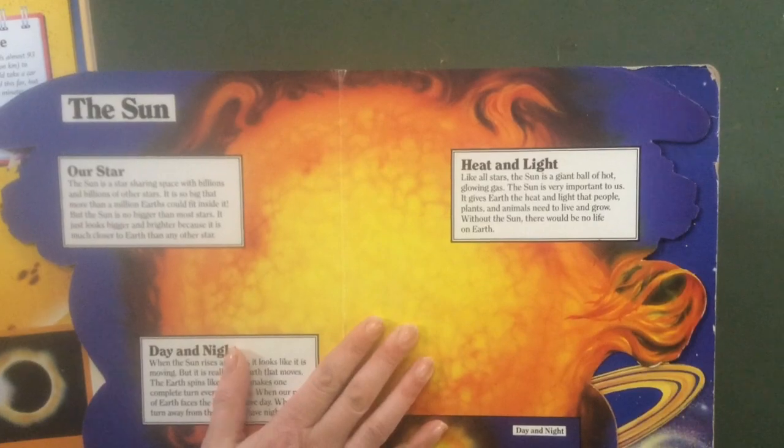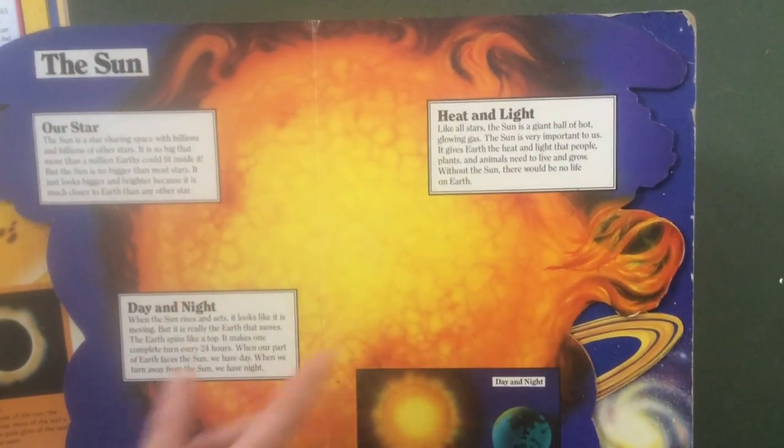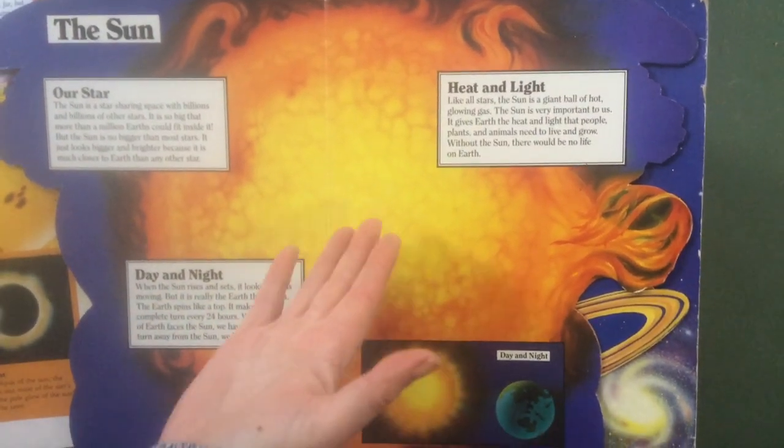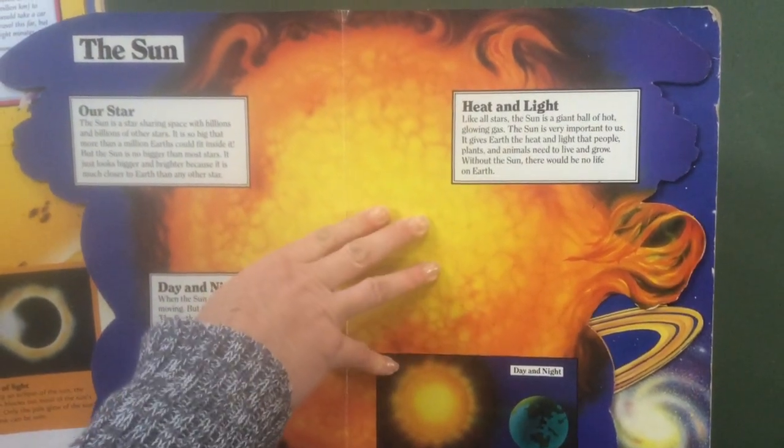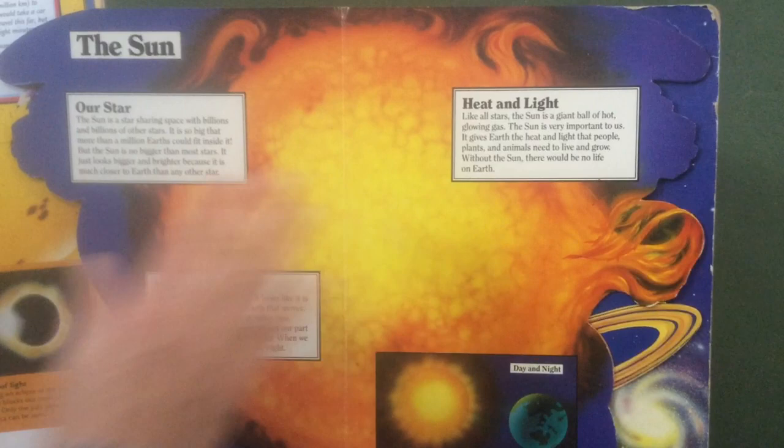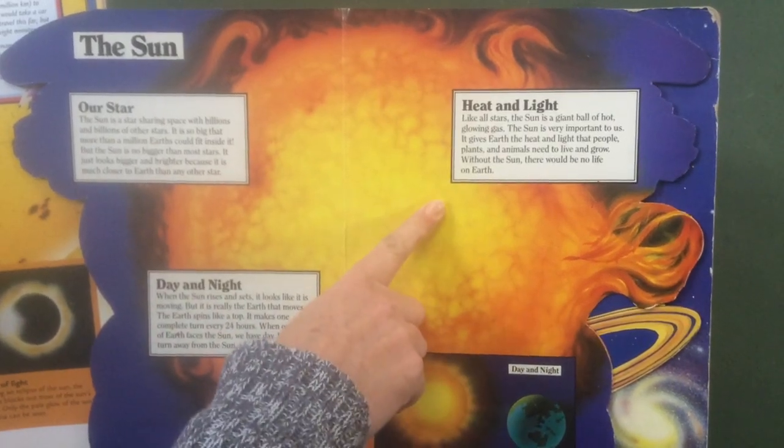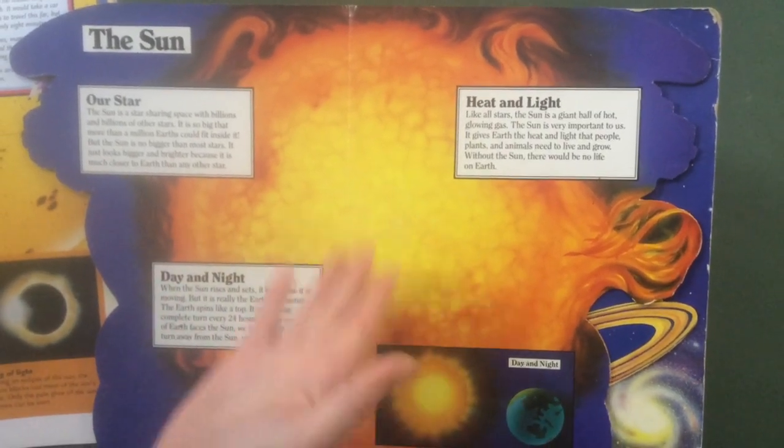That people, plants and animals need to live and grow. If we don't have the sun, we can't live. We can't grow. And animals can't grow and live. And plants can't grow and live. Without the sun, there would be no life on the earth.